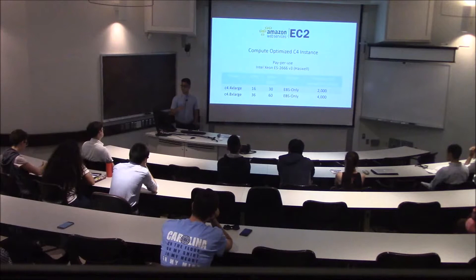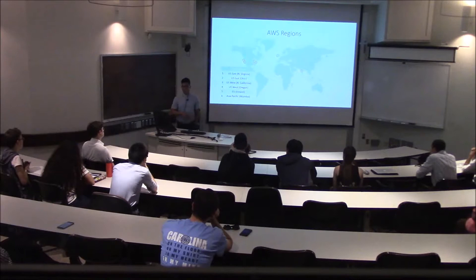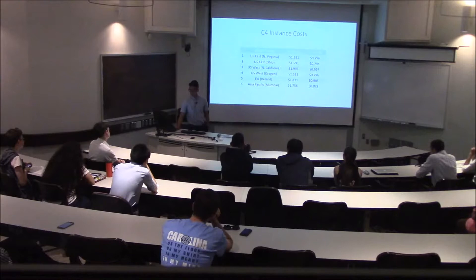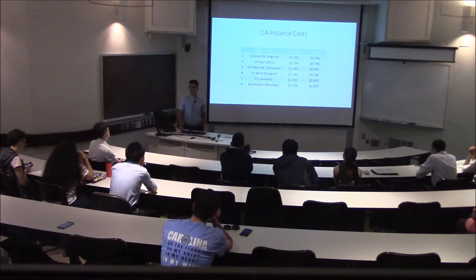We also evaluated across different server regions, starting from the closest to our location in Chapel Hill: US East North Virginia, then Ohio, then North California, Oregon, Ireland, and we also wanted to see a really bad case so we tested it in Mumbai as well. Costs were pulled recently in April for the two instances. The difference between these centers also plays a role in choosing the balance between which instance to use, considering the latency from greater distance against the cost.